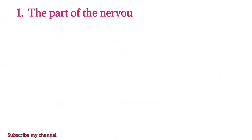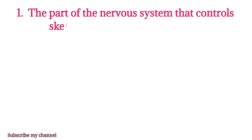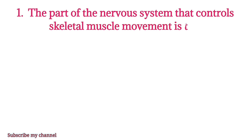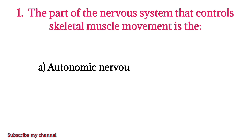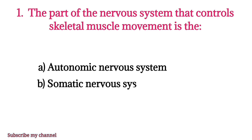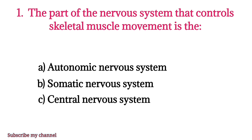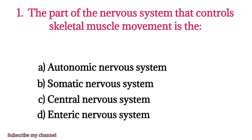MCQ number one: The part of the nervous system that controls skeletal muscle movement is — option A: autonomic nervous system, option B: somatic nervous system, option C: central nervous system, option D: enteric nervous system. The right option is option B.